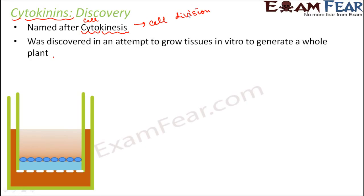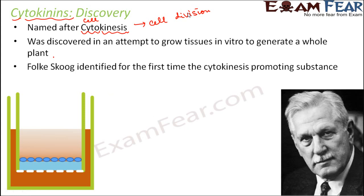Then it was finally observed that other than the components like the minerals and vitamins needed for plant growth, they added another component which actually helped in regenerating the entire plant. And what was that additional component? That additional component was coconut milk. So coconut milk was the key component which helped in generating the whole plant.